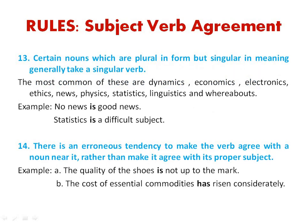Rule 13: certain nouns that are plural in form but singular in meaning generally take the singular verb. The most common of these are dynamics, economics, electronics, ethics, news, physics, statistics, linguistics, and whereabouts. For example, 'no news is good news' — 'news,' though it sounds plural, takes the singular verb. Similarly, statistics, economics, and linguistics all take the singular verb in use.